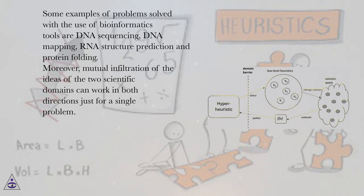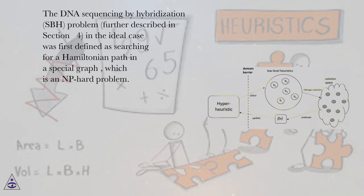Moreover, mutual infiltration of the ideas of the two scientific domains can work in both directions just for a single problem. The DNA sequencing by hybridization (SBH) problem, further described in section 4, in the ideal case was first defined as searching for a Hamiltonian path in a special graph, which is an NP-hard problem.